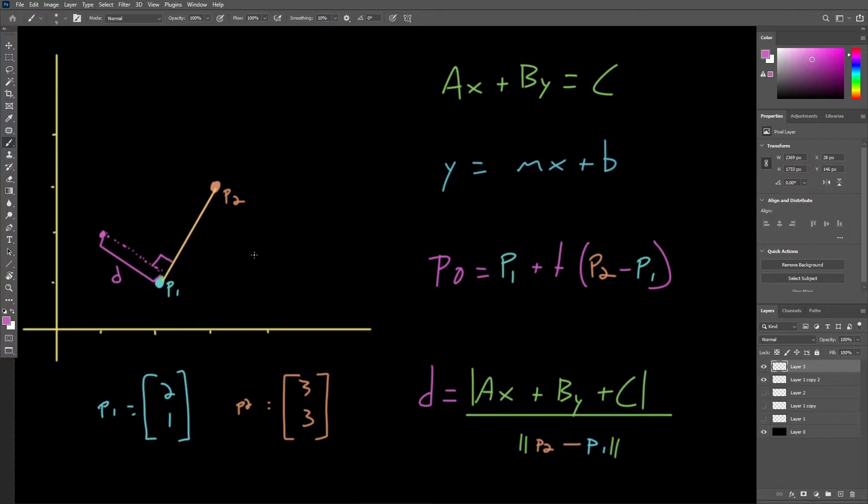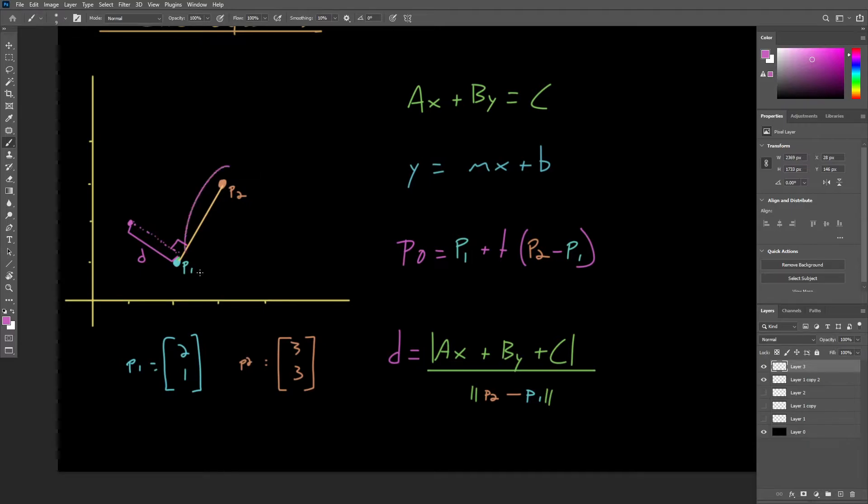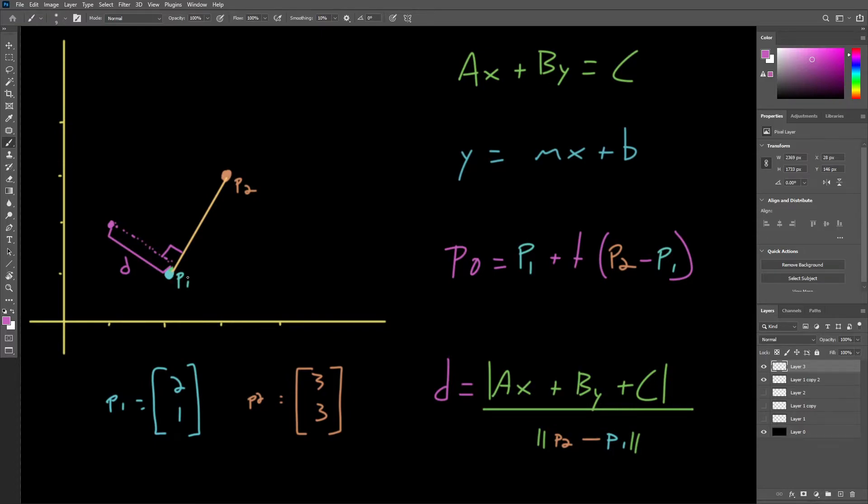Let's just quickly figure out the line equation for this line segment right here. We can see that P1 is at the components 2, 1, P2 is at 3, 3.